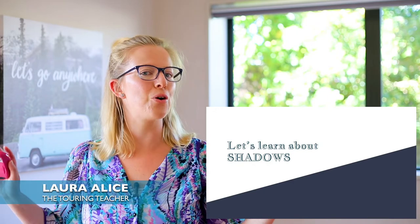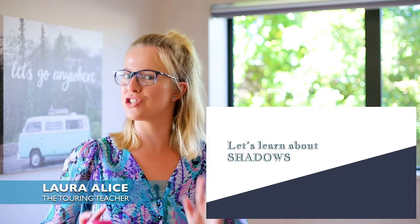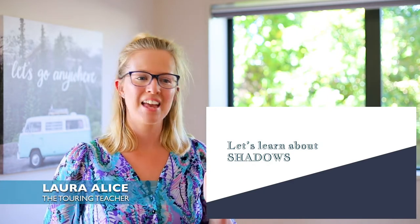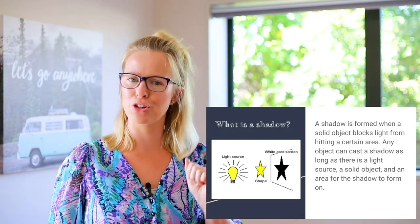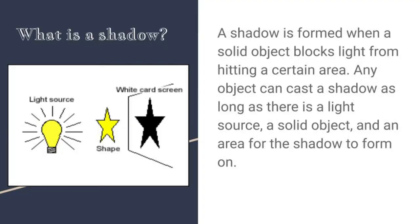Today let's learn all about shadows. So what is a shadow? A shadow is formed when a solid object blocks light from hitting a certain area. Any object can cast a shadow as long as there is a light source, a solid object, and an area for the shadow to form on.